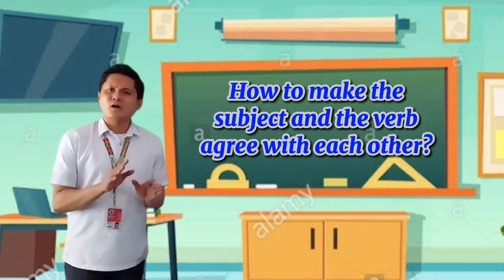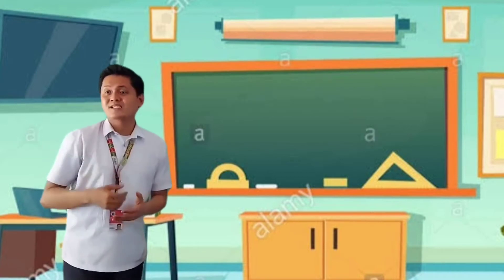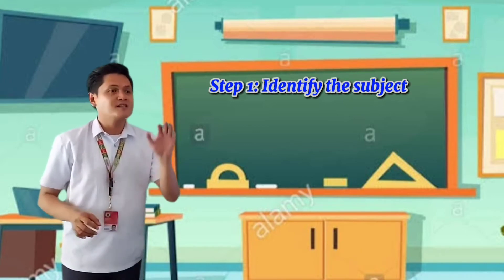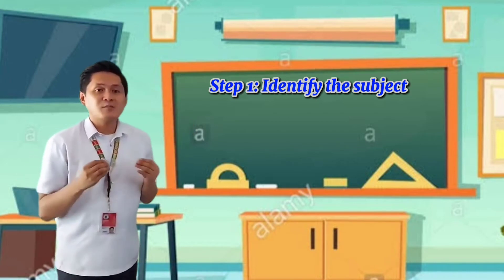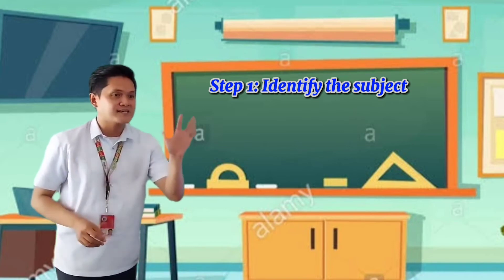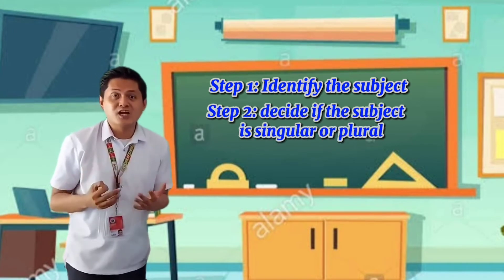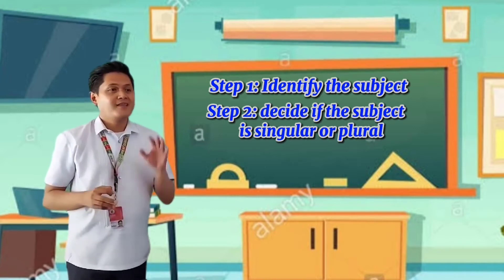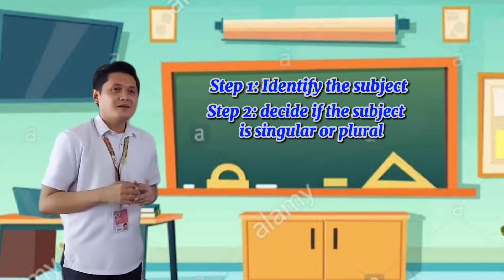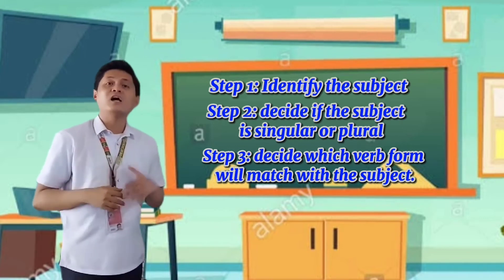Next question: how do you make the subject and the verb agree with each other? What are the simple steps to follow? Yes, Jericho, what is the first step? Very good! The first step is to identify the subject first. What's the second step? Trisha said that we have to identify first the subject, and then what's the next step? Peter, what is the next step? The next step is to decide if the subject is singular or plural. And then what is the last step? Yes, Harold? The last step is to decide which verb form will match with the subject.